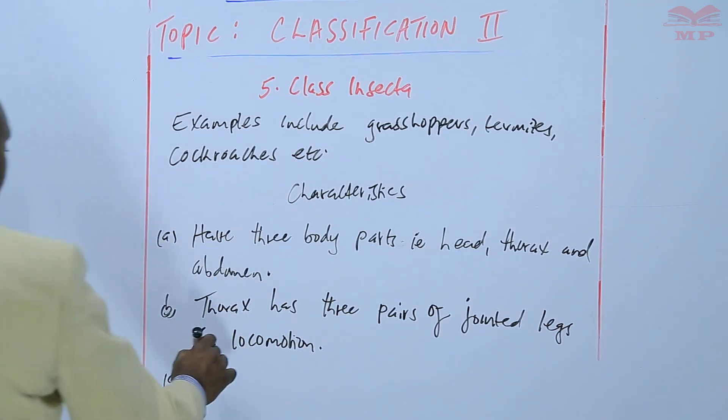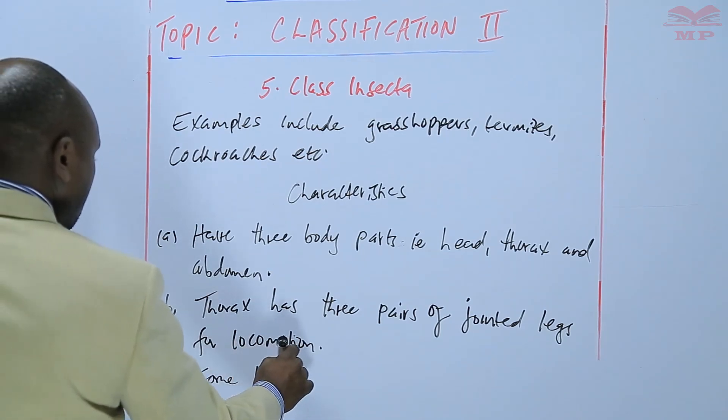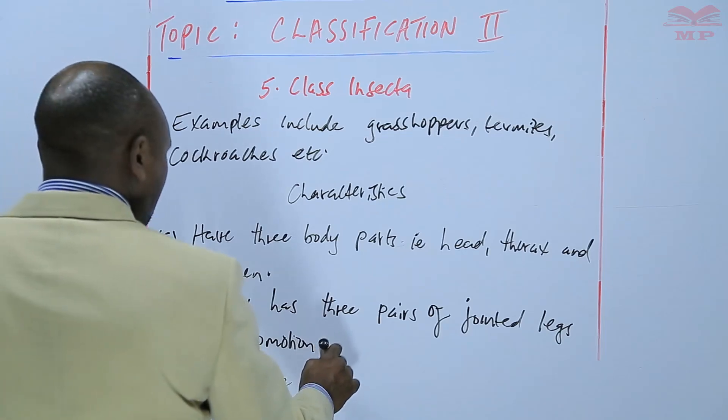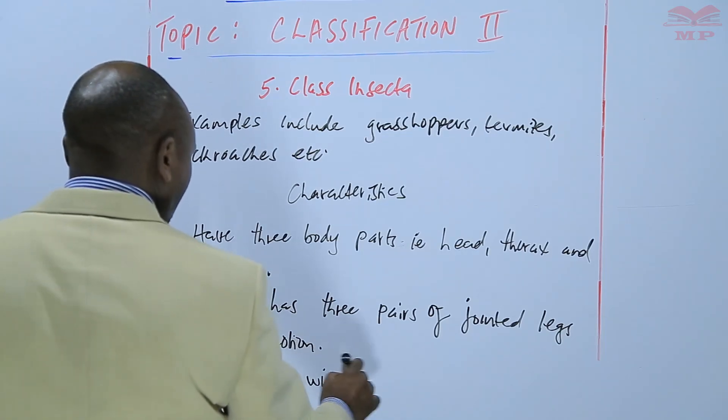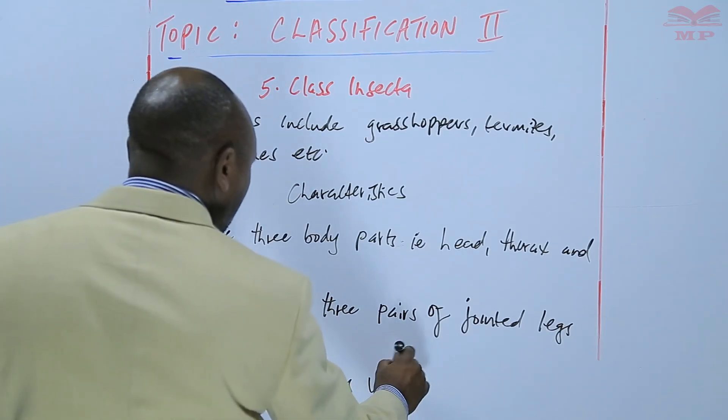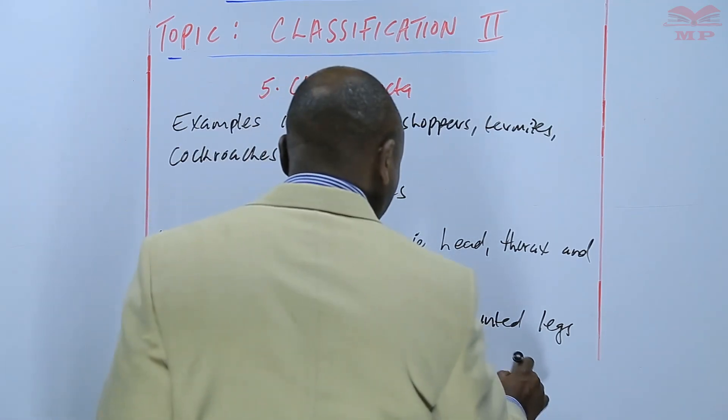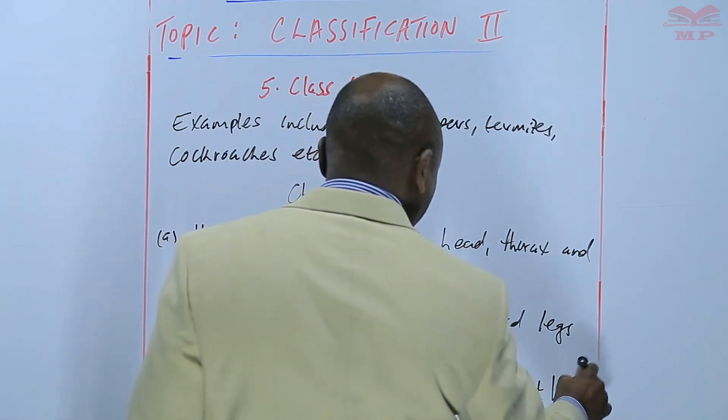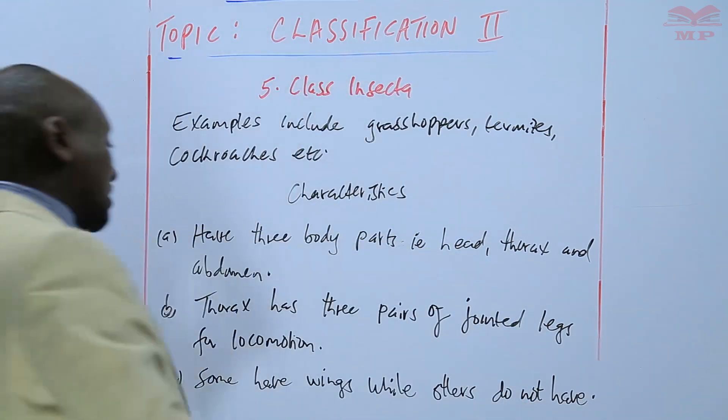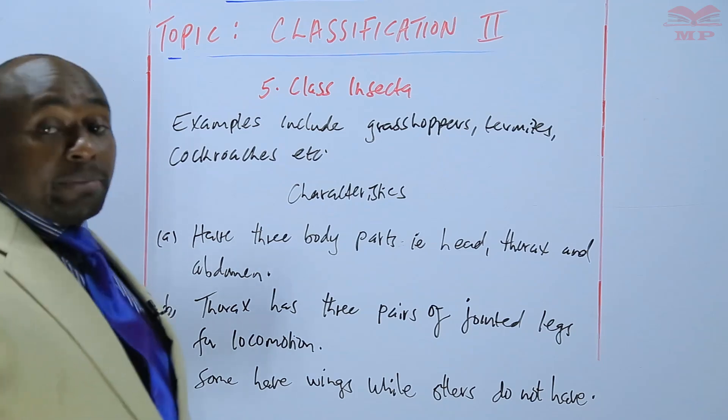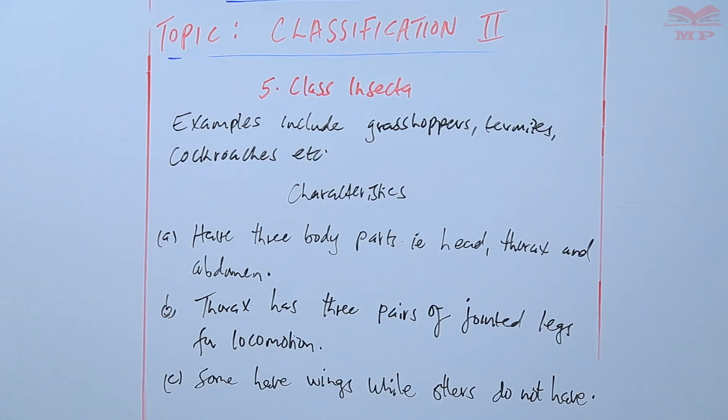Some insects have wings, some have wings, while others do not have. So among those that have wings, there are those that have one pair of wings and others have two pairs.